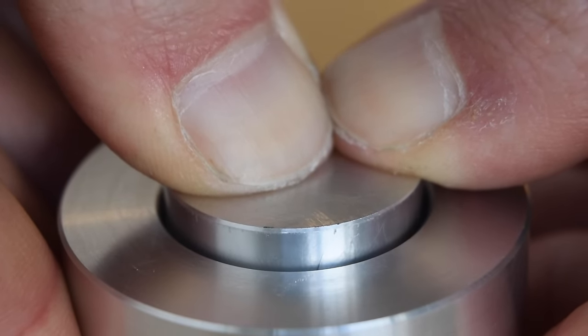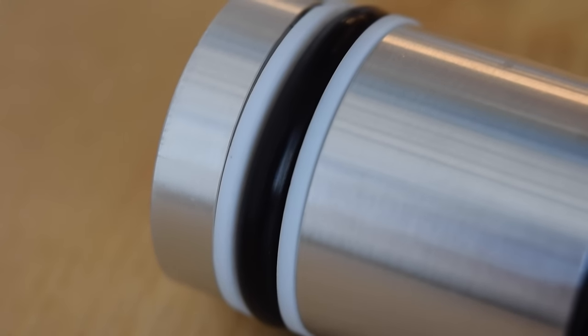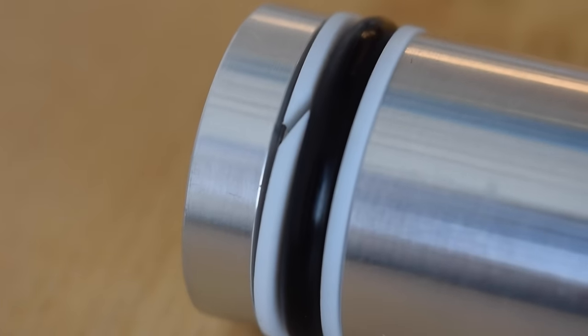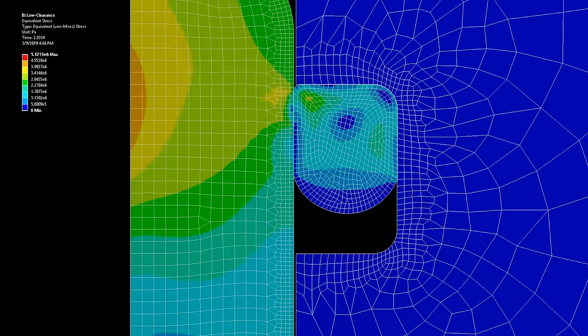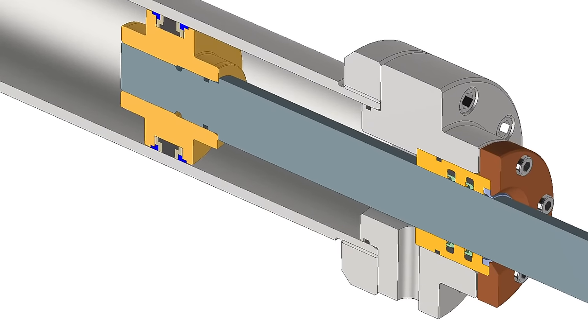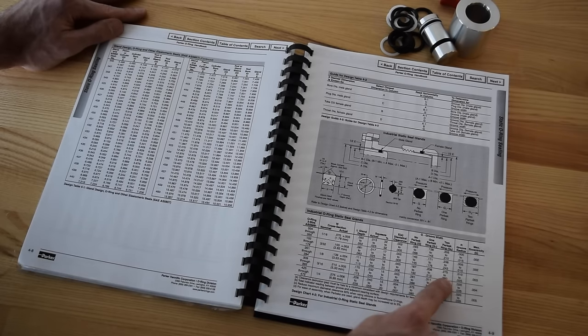O-rings are the epitome of elegant engineering. The ring itself costs only a few cents, and the groove it goes in is simple and easy to manufacture. But despite this simplicity, the resulting seal is able to reliably hold many thousands of psi of pressure. O-rings are definitely a machine design component you'll want to be familiar with, and in this video we're going to tell you all about how to design seals with them.